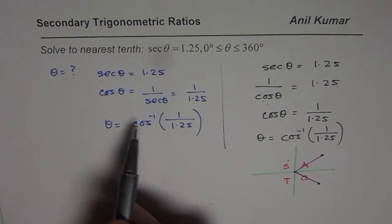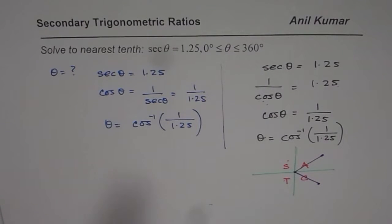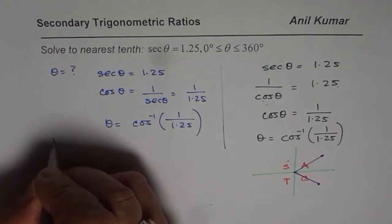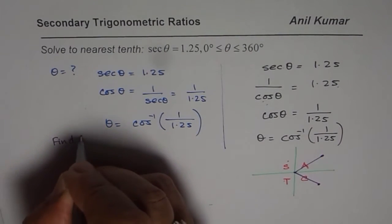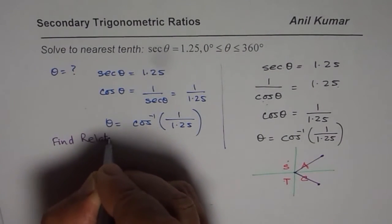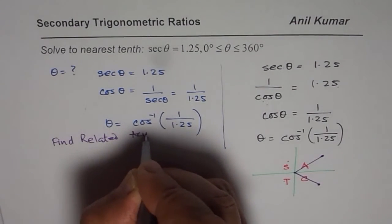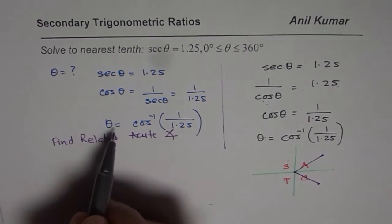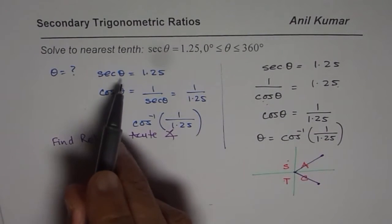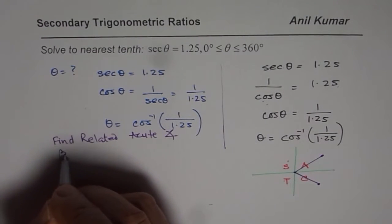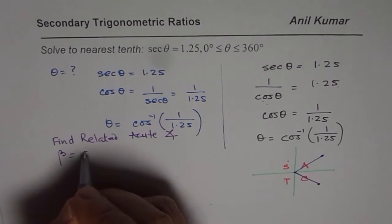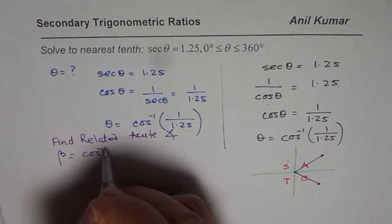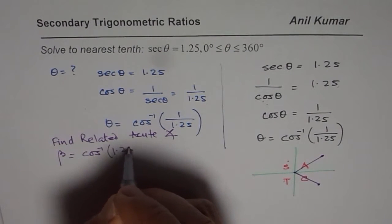Therefore, our strategy in such questions is always find the related acute angle. That is the strategy. So what we do is, we don't really go straight for the theta. We say, let angle B be cos inverse of, drop the sign. Here it is positive, just use positive.